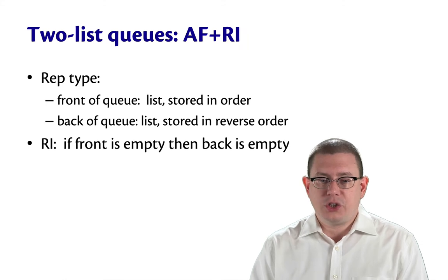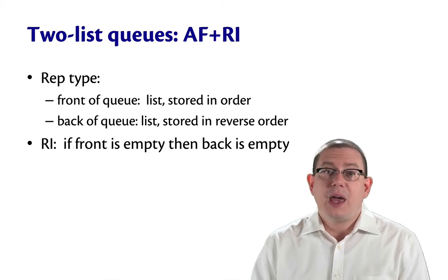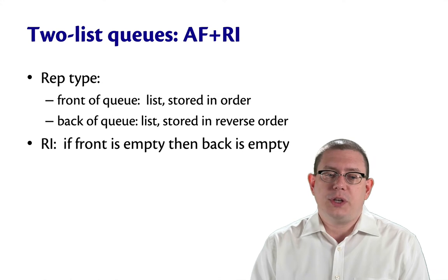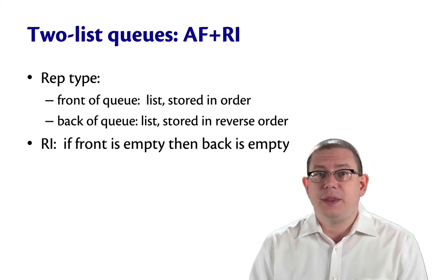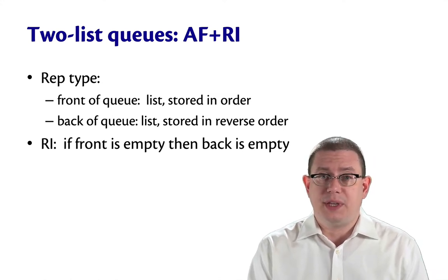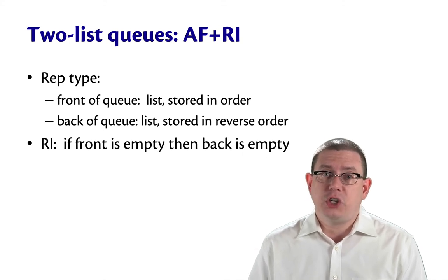So we had a representation type, as I've just described, and we had a representation invariant, which is that if the front is empty, then the back also must be empty. That gave us a unique representation of the empty queue.